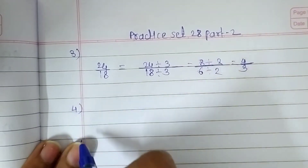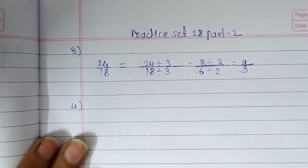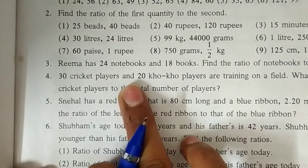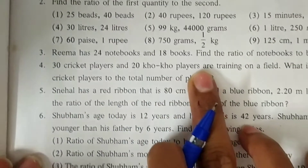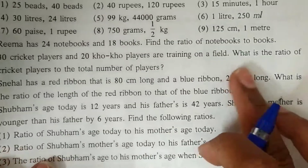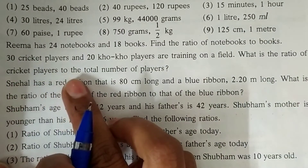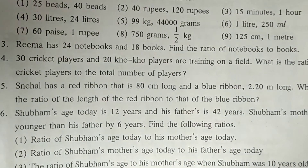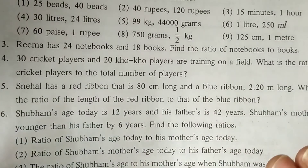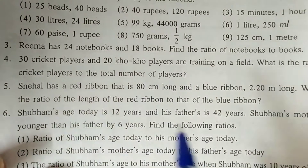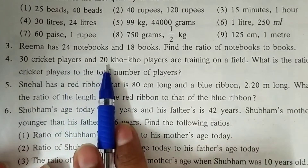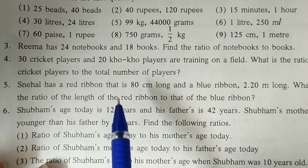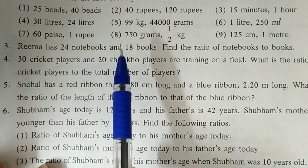Now question number four: 30 cricket players and 20 kho-kho players are training on a field. What is the ratio of cricket players to the total number of players? The total number of players is 30 plus 20, which equals 50. We have to find the ratio of 30 to 50.